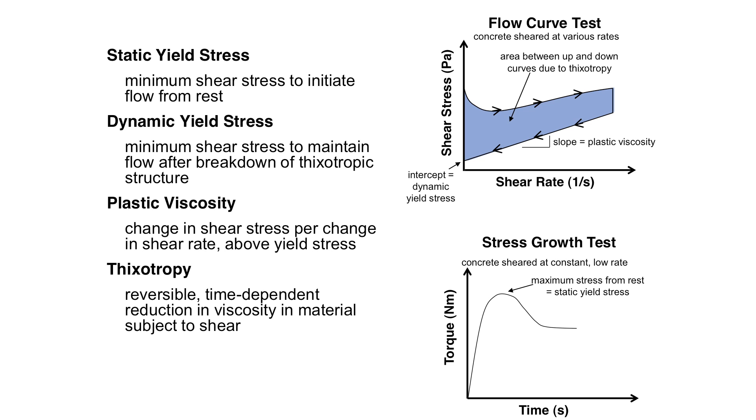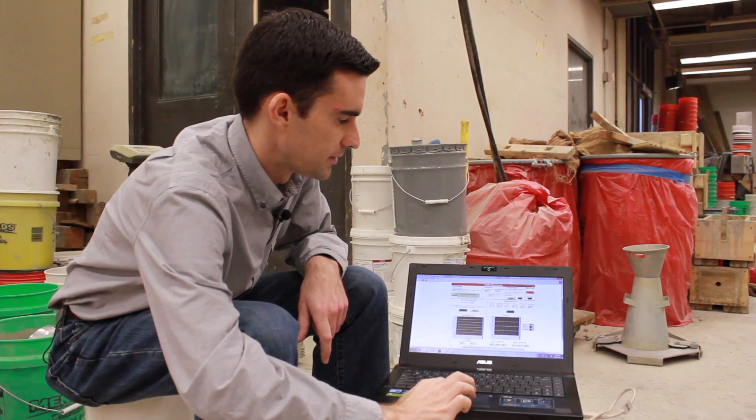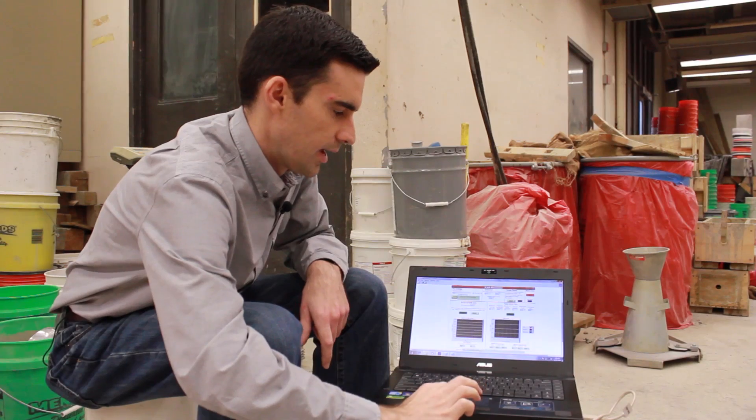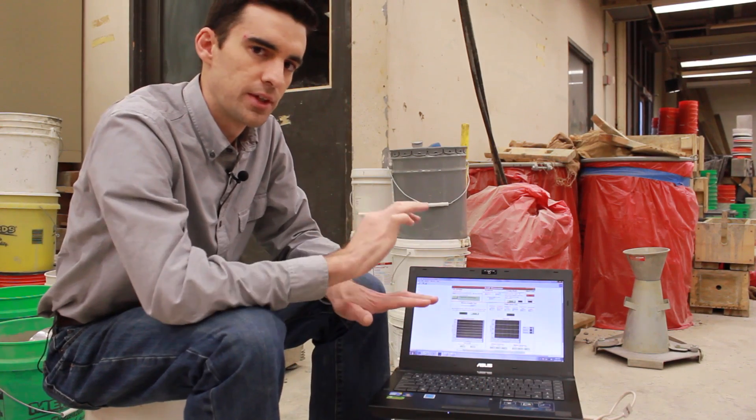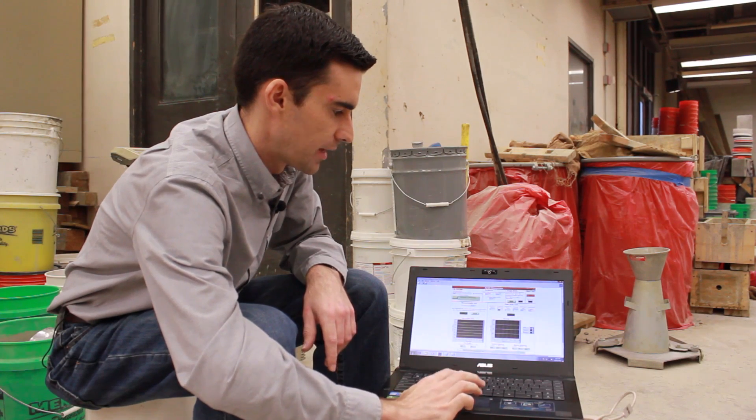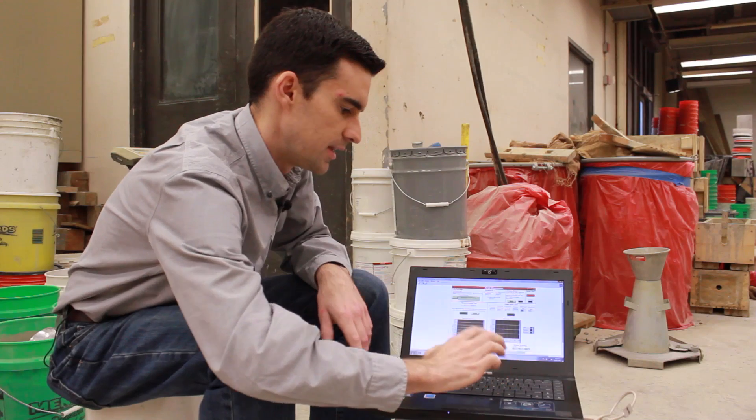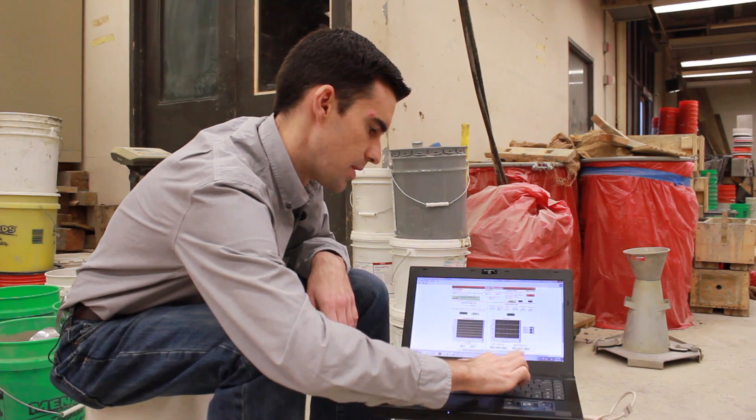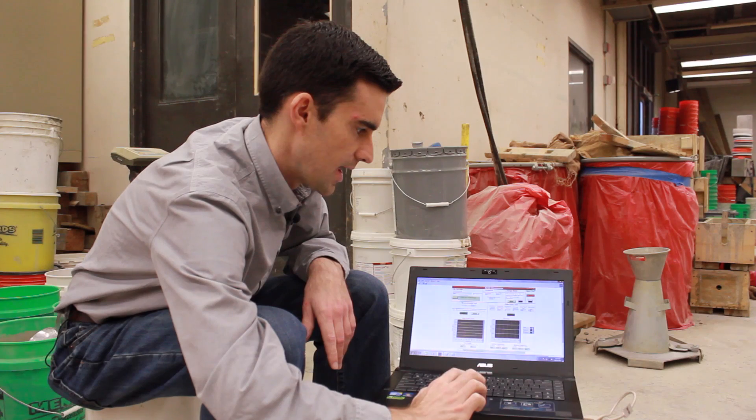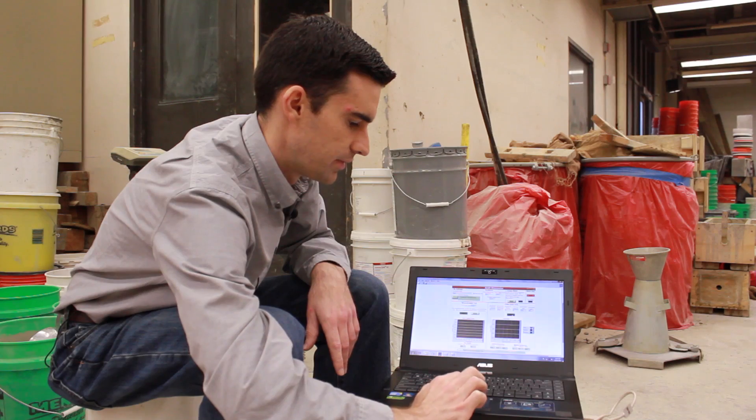To run that curve with the rheometer, we have to run two flow curve tests back to back. For the first flow curve test, we'll set the breakdown time to one. That's because we want the concrete to be initially at rest. We'll then set the initial breakdown speed to our minimum speed. In this case, we'll say 0.05 revs per second. We then set the initial speed to the lowest speed, 0.05, and the final speed to the maximum speed, in this case 0.5. We'll then press start to run this test.